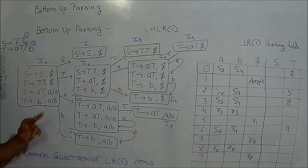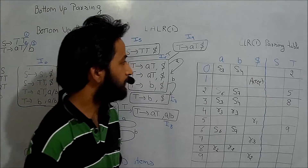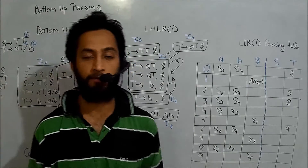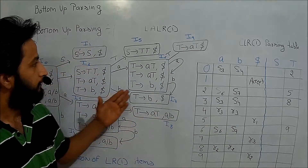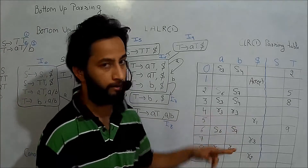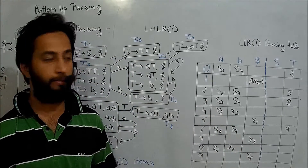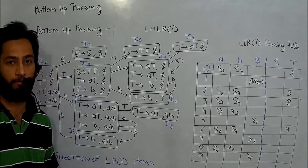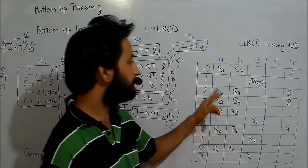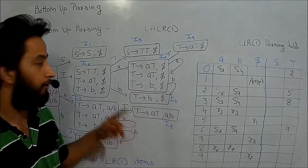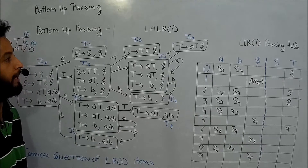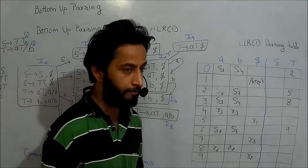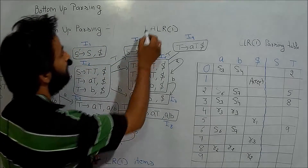This completes the CLR1 parsing table for the given grammar and canonical collection. The difference is: in LR0 the reduce move is placed under the complete row; in SLR1 it is placed under the follow set of that production; in CLR1 the reduce move is placed only under the lookahead symbols of that item.